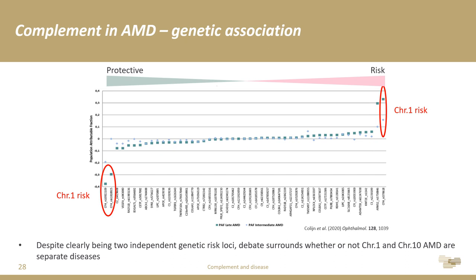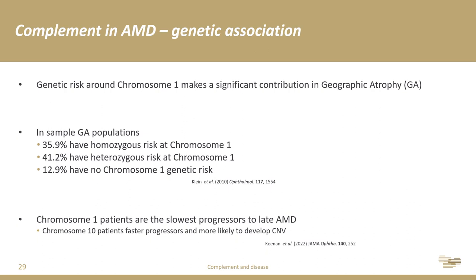Genetic risk around chromosome 1 makes a significant contribution specifically to geographic atrophy. In a sample GA population, quite a lot of patients are homozygous for risk at chromosome 1, and the majority are at least heterozygous. Only around 13% do not carry any genetic risk at that locus — a strong enrichment of chromosome 1 risk in geographic atrophy. Chromosome 1 patients tend to be the slowest progressors to late-stage AMD, whereas chromosome 10 patients are much faster progressors and more likely to develop choroidal neovascularization.